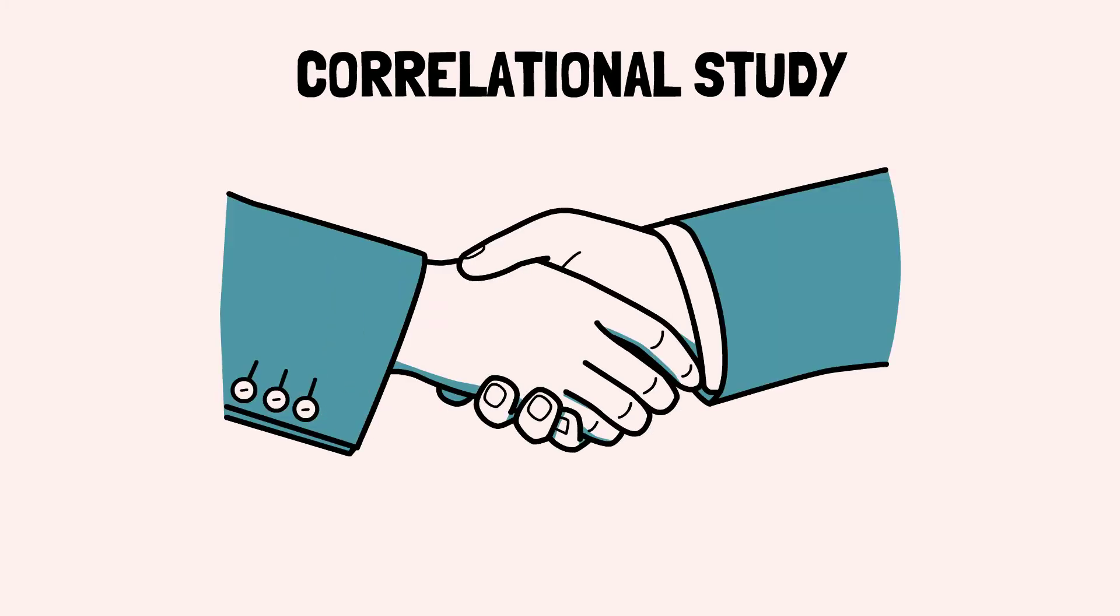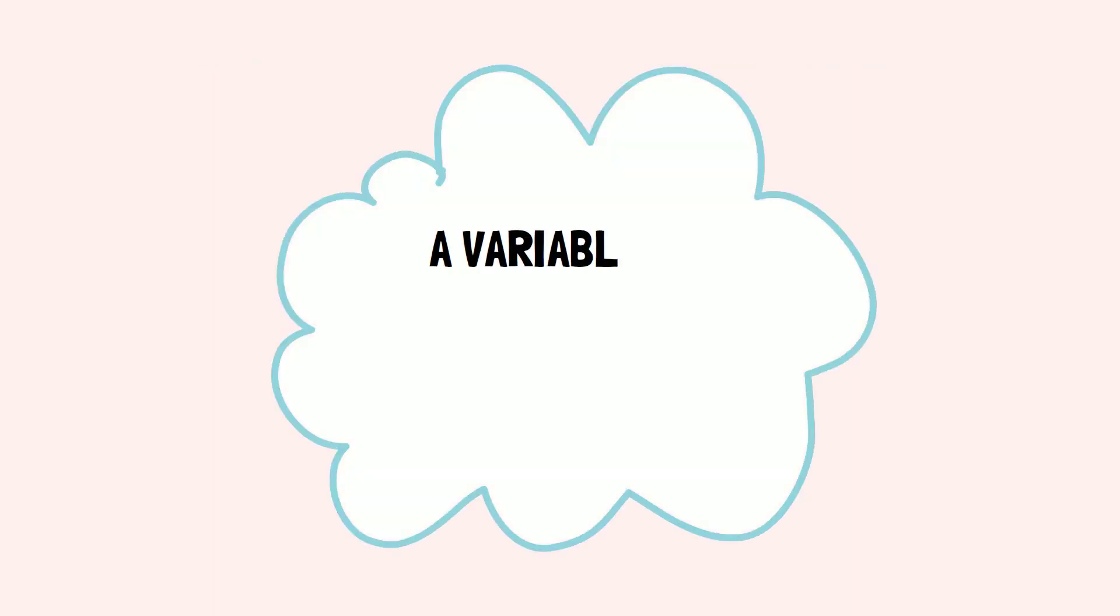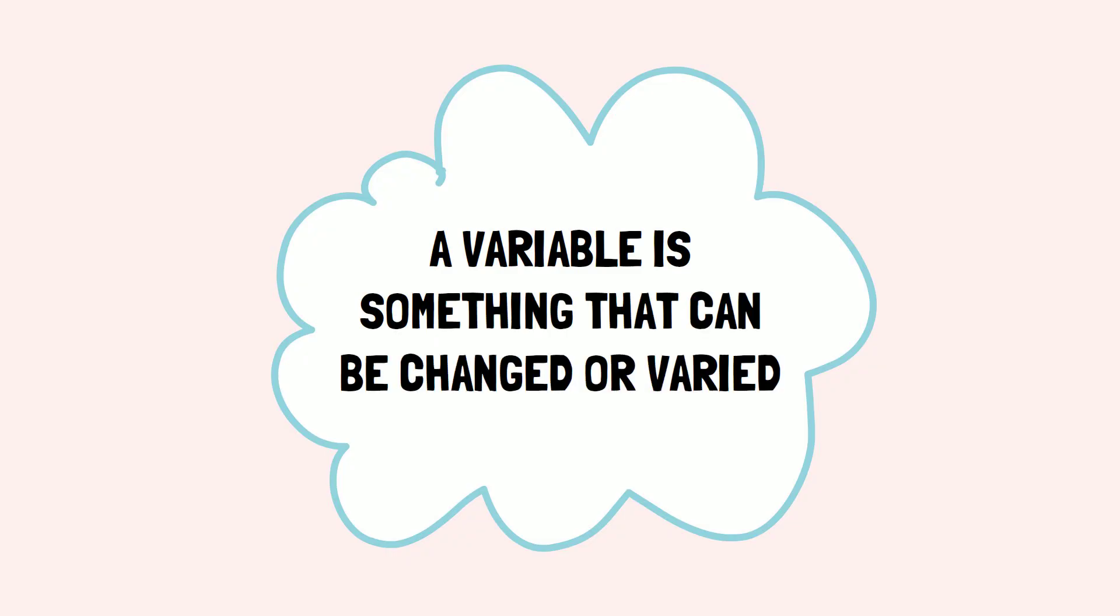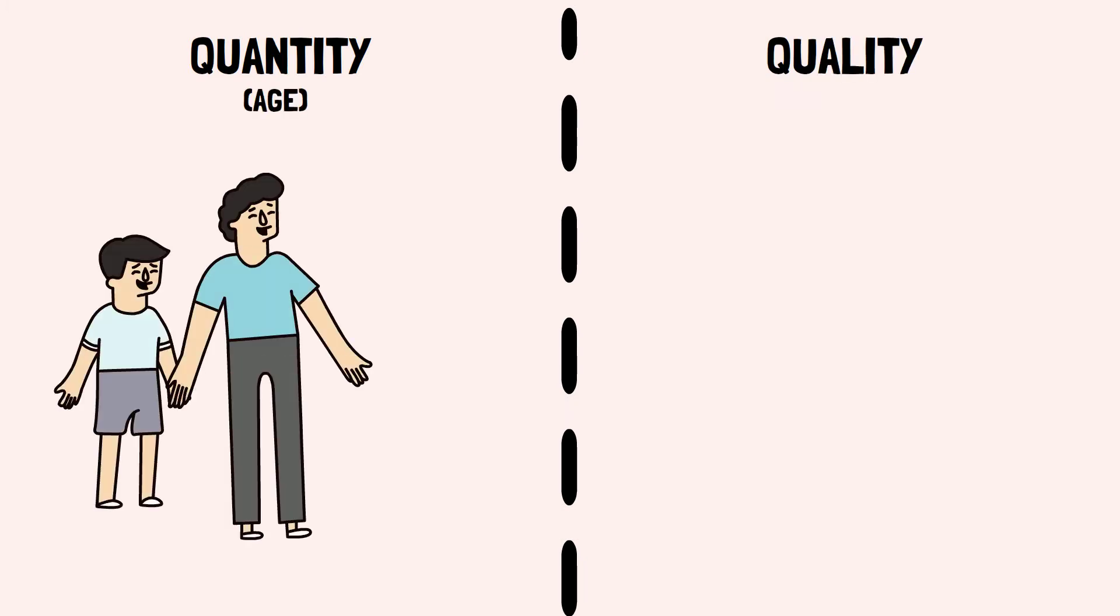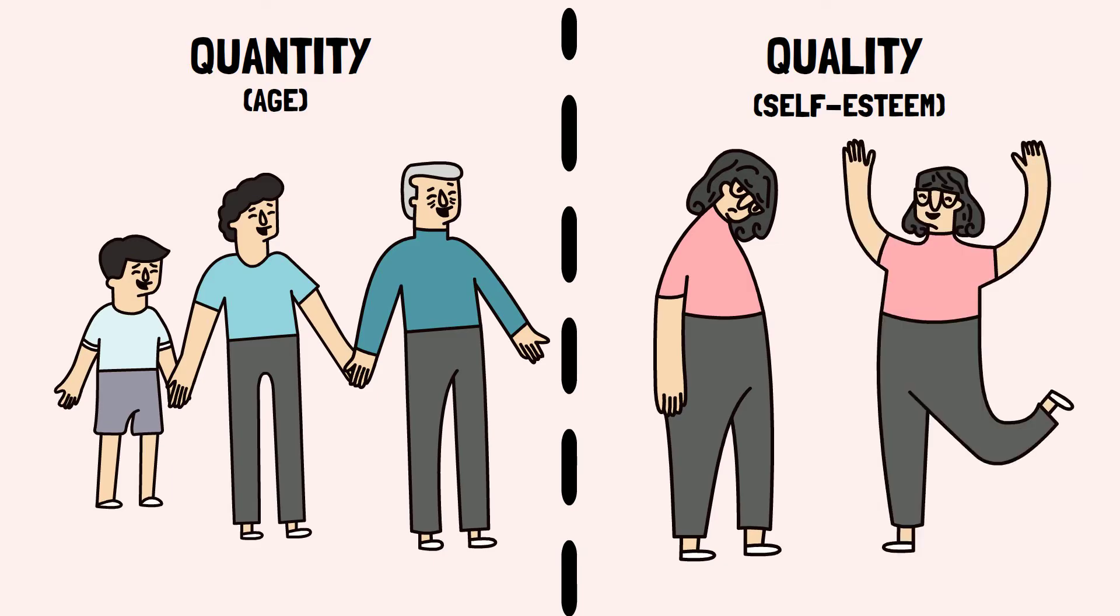A correlational study looks for variables that seem to have a relationship with each other. When you see one variable changing, you have a fair idea of how the other variable will change. A variable is something that can be changed or varied, such as a characteristic or a value. It includes quantity or quality that varies across people or situations, such as age or self-esteem. All of us have these but at varying degrees.